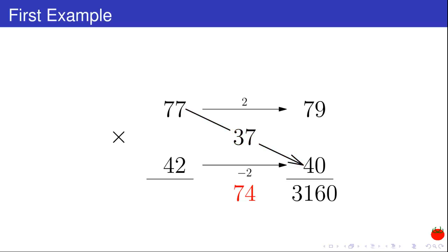Fourth step. I calculate the product of this difference with the offset I used in the first step. 37 times 2 is equal to 74.